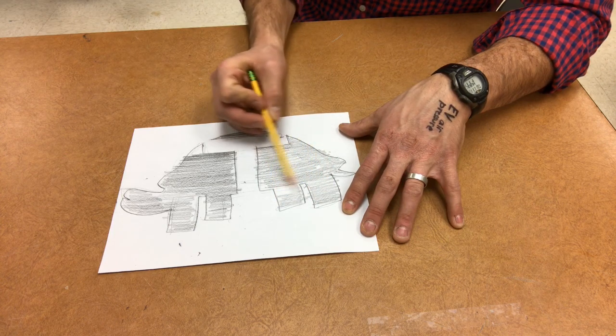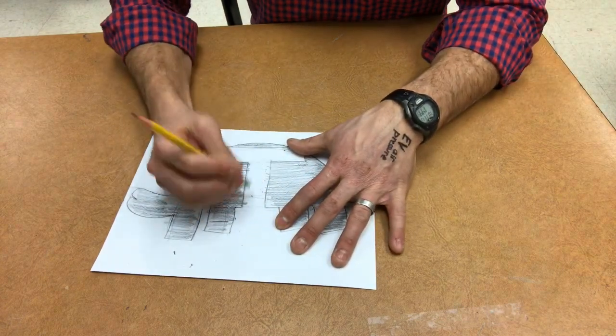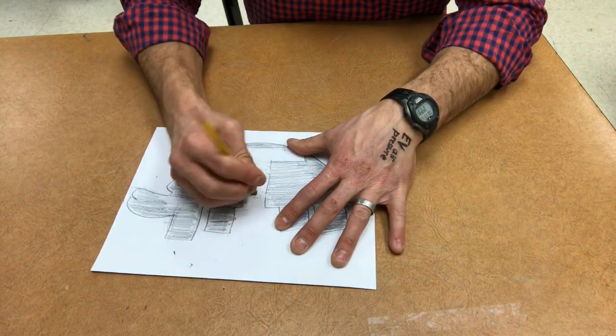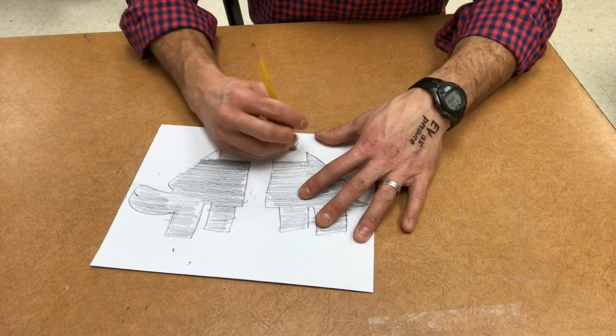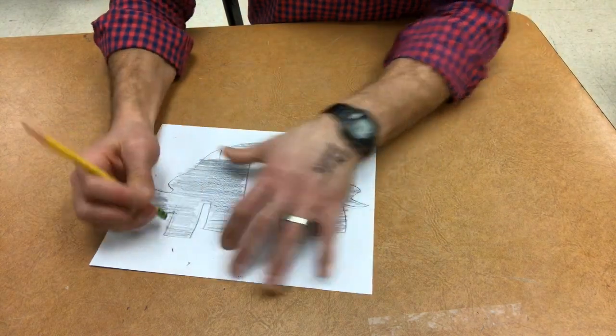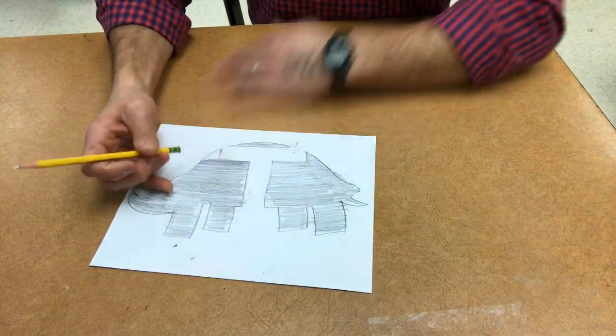Once you fill in all those areas, make it a nice high quality drawing by erasing the lines that go outside of their desired location and then filling in any of the other additional gaps.